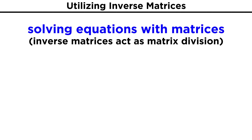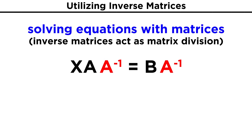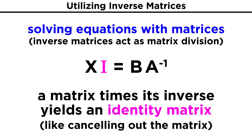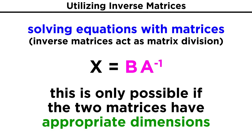So what do we need inverse matrices for? Well, as we said earlier, there is no such thing as matrix division, so we can use this technique to solve equations with matrices where division would be necessary from an algebraic standpoint. If we have matrices X, A, and B, where X times A equals B, and we want to solve for X, we can't divide both sides by matrix A. Instead, we can multiply both sides by A inverse. On the left side, A times A inverse will give us the identity matrix, which we can essentially treat like the number one and get rid of it. On the right side, we have a product of two matrices that we can compute, which will be equal to X. Of course, this assumes that the dimensions of the matrices are such that the product can be calculated, otherwise this will not work.